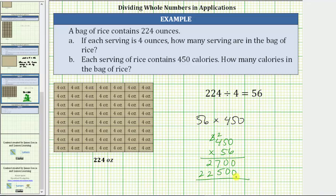Now we add: zero plus zero, zero plus zero, seven plus five is 12, record the two, perform an exchange with the one. We have one plus two plus two, that's five, and then we have a two. The product is 25,200.